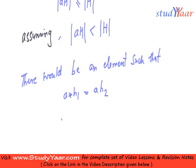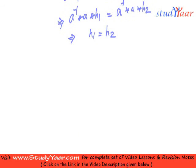But, this basically implies A inverse A star H1 is equal to A inverse A star H2, which basically tells me that H1 is equal to H2. Therefore,